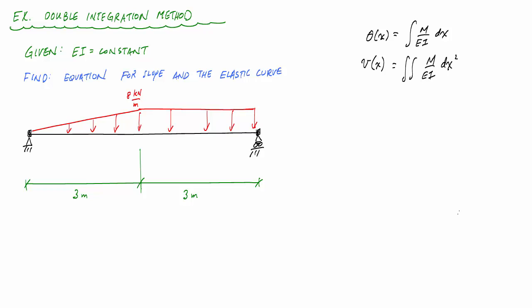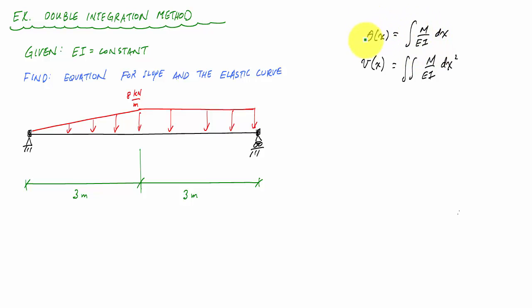Welcome back to Structure Free Learning. In this video we're going to do an example problem for the double integration method. I'm given a simply supported beam with a linearly distributed load for three meters and a uniformly distributed load for the second half of the beam — another three meters. The flexural rigidity EI is constant and we want to find the equation for the slope and the elastic curve. As a reminder, one integral from the curvature function gives you the slope; integrating twice gives you the displacement.